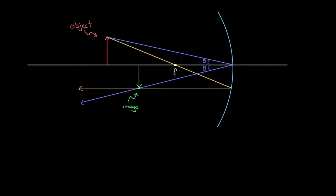That's what we're going to derive in this video. It's called the mirror equation, and it'll tell us how to relate the object distance, the image distance, and the focal length. If you look in a textbook it looks complicated, but it's not actually as bad as it looks. We're going to start with drawing triangles, and we'll notice that these two angles are the same — we're going to use this to our advantage.